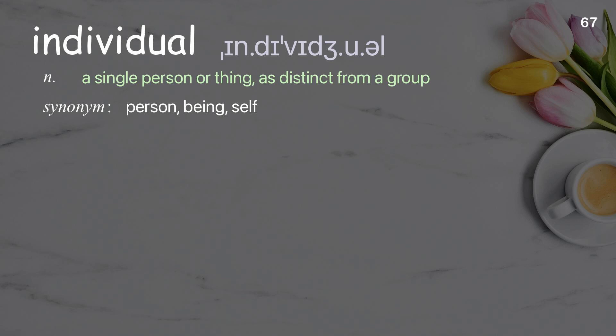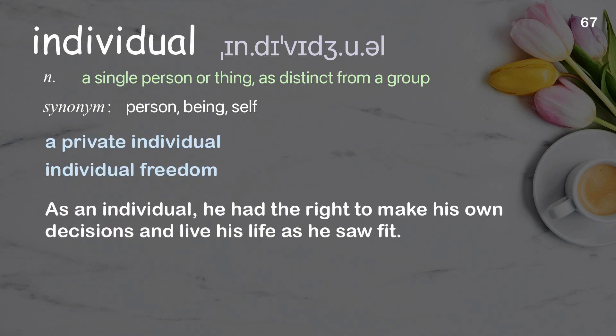Individual: a single person or thing as distinct from a group. Examples: a private individual, individual freedom. As an individual, he had the right to make his own decisions and live his life as he saw fit.